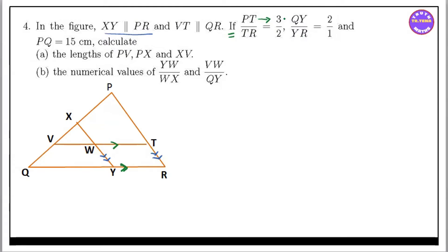So if we add X, Y, Z — we add X, Y, Z — PT equals 3. Then we add PQ. PQ is 15, now 15 cm.